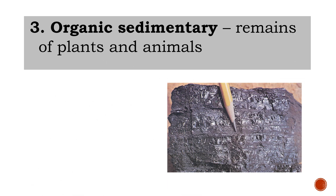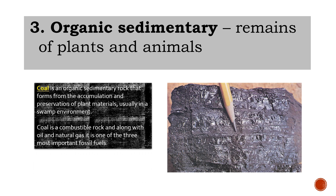The third type is organic sedimentary rocks, formed from the remains of plants and animals. The best example is coal — an organic sedimentary rock that forms from the accumulation and preservation of plant materials, usually in a swamp environment. Coal is a combustible rock, and along with oil and natural gas, it is one of the three most important fossil fuels.